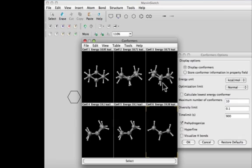You can also see that there's quite a bit of eclipsing, not perfect eclipsing, but quite a bit of eclipsing going on in these twist boat forms.